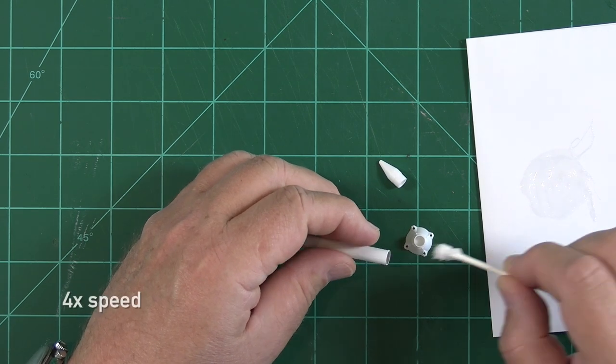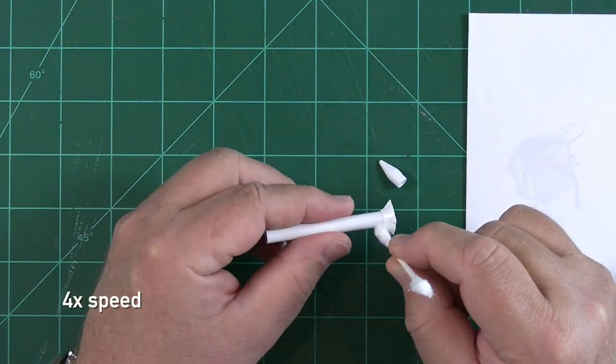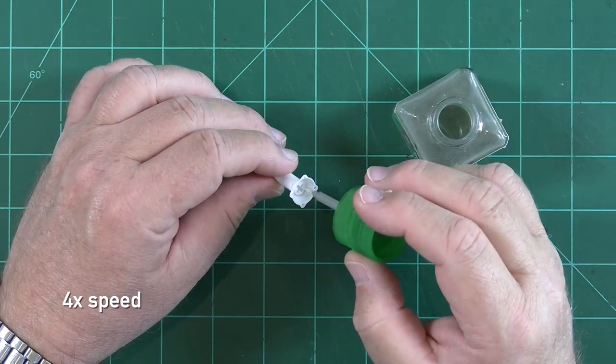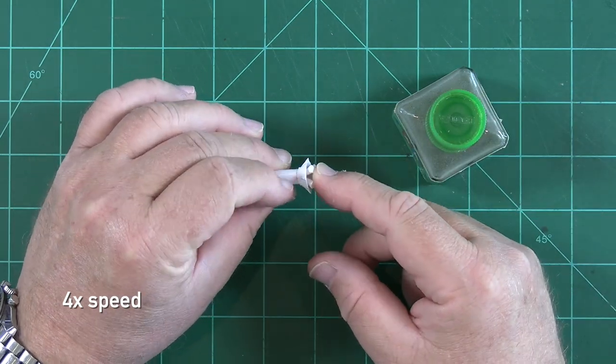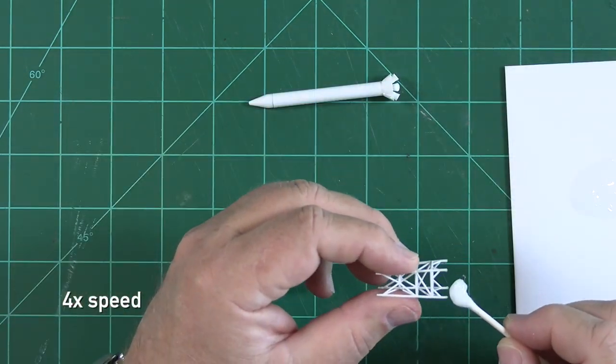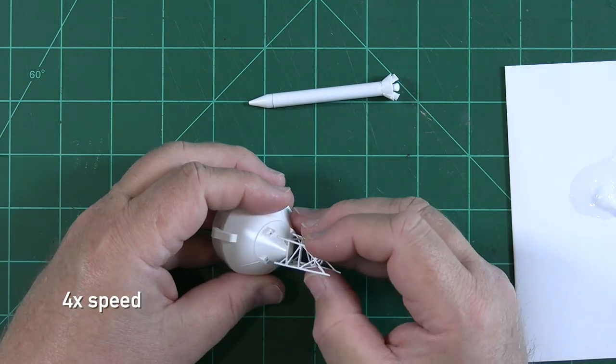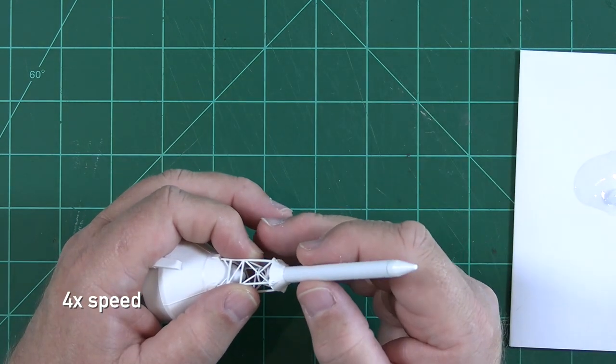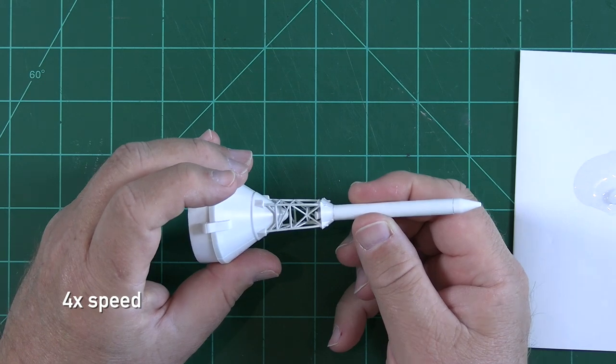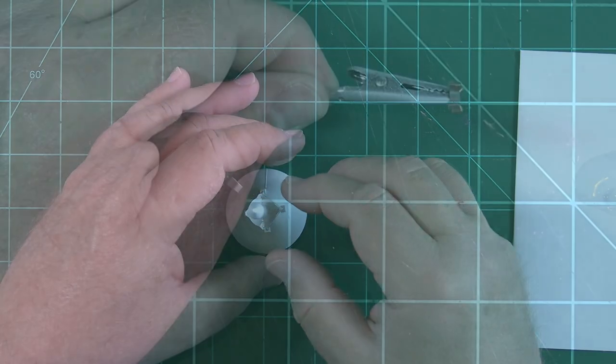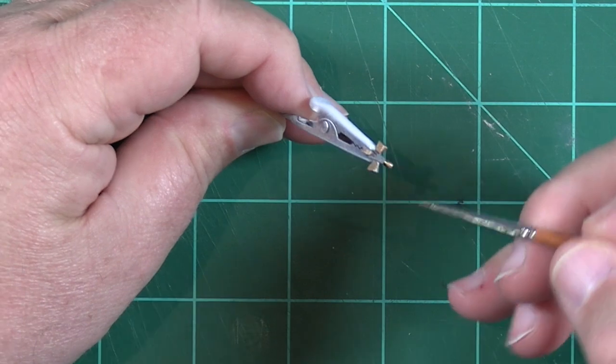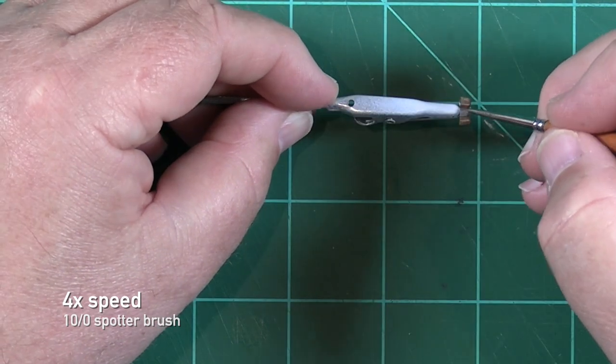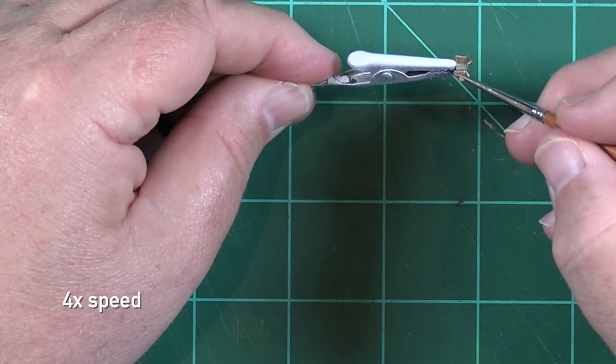The cone and skirt are added to the launch escape system motor tube with a little bit of epoxy. Next, we add the LES nozzles to the underside of the skirt with some liquid cement. The 3D printed tower lattice from Galactic Manufacturing is then mounted to the command module with a little bit of epoxy, and the LES motor subassembly is added on top of that. After reviewing some photos of the Apollo service module, I decided to paint the RCS thruster modules gray, and then use a tiny paintbrush to paint the nozzles gold.